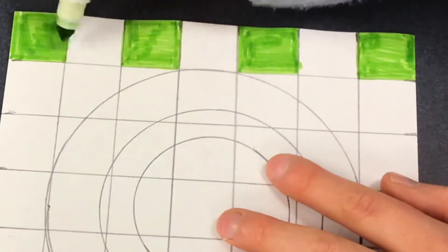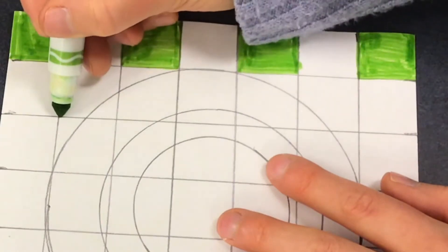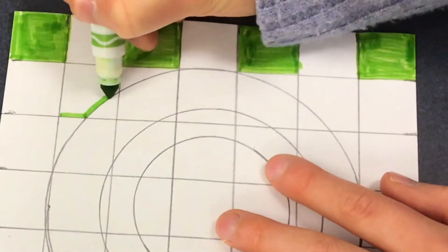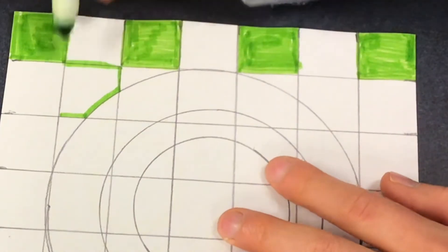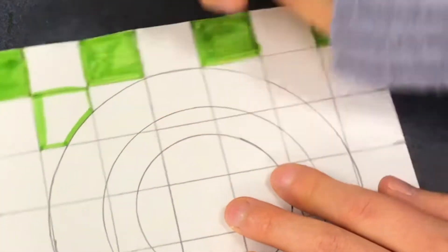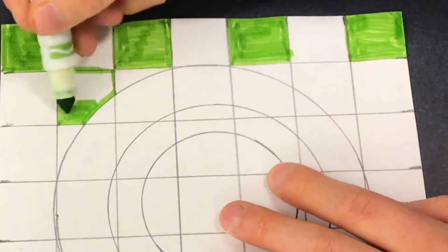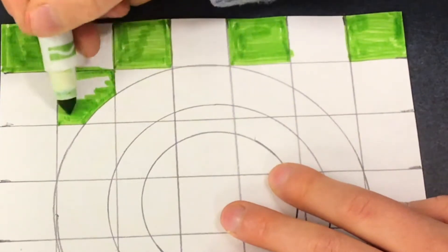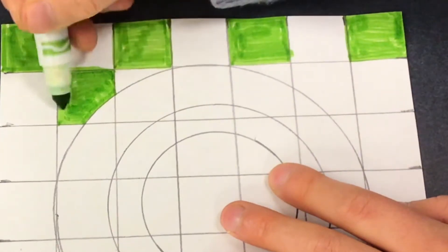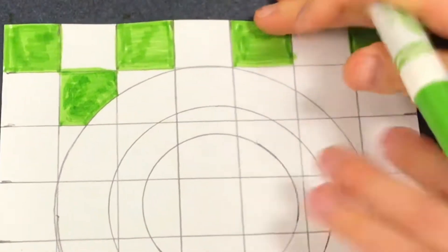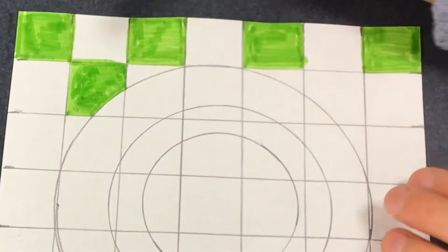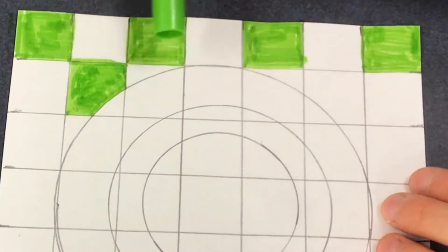Now on this next row, some of the squares are touching the circle. So I'm only going to color the parts of the squares that are outside the circle for now because we are leaving the circle blank. You can pretend that the inside of the circle is lava and it's going to melt your crayon or marker if you touch it, if that helps.